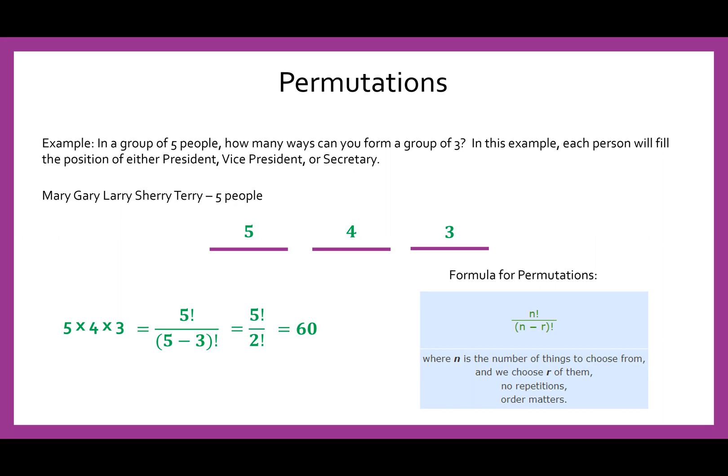So notice the main difference between combination and permutation is that permutations really give you a lot more options because you have the positions to fill. So you can have the same three people. Let's say you had Mary, Gary, and Larry. That's now different from Gary, Mary, Larry, which is also different from Larry, Gary, Mary, and Larry, Mary, Gary. So the order matters here, which is why you end up with so many extra options.